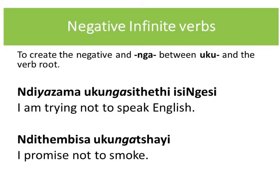Lastly, we look at how to create a negative on these infinitive verbs. The 'nga' construct is used to create the negative of the infinitive verb, and the last 'a' changes to an 'e'. For example, 'I'm trying not to speak English' is 'ndizama ukungasisithethi isiBhulu'. Notice 'nga' is the negative of your infinitive verb. Similarly, 'I promise not to smoke' also uses this pattern, with 'nga' as your negative construct for the infinitive verb.